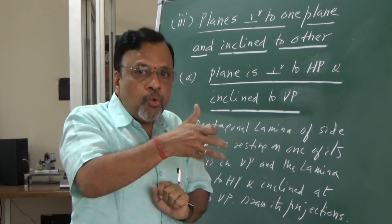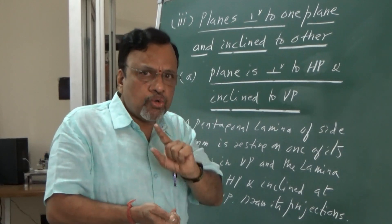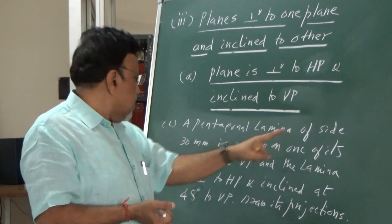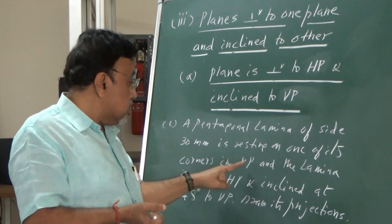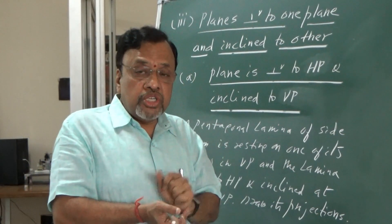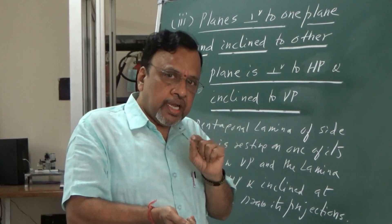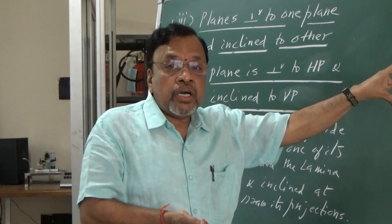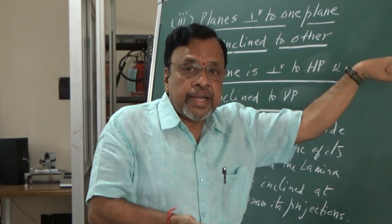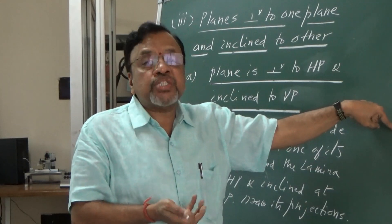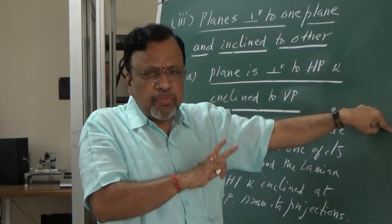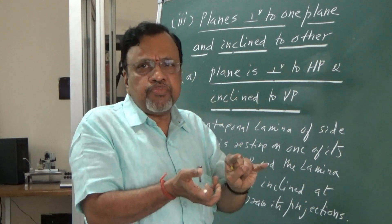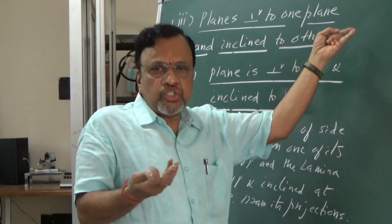The next conclusion is regarding the orientation, which has to be derived from the problem statement. It is given that this particular lamina of side 30 mm is resting on one of its corners on VP. Since it is resting on one of its corners on VP, in the initial position, the line joining that corner and the center of the lamina should be parallel to the XY line or parallel to HP — similar to what I would do for the top view, but now I am talking about VP details.